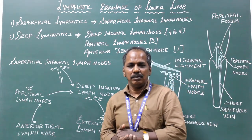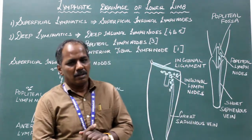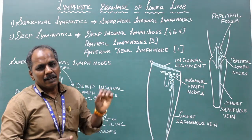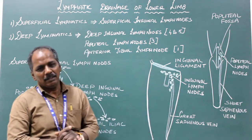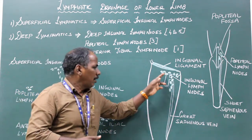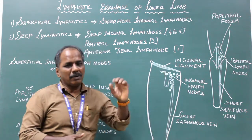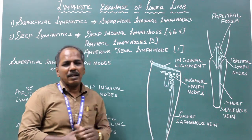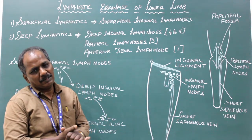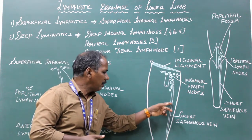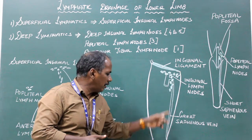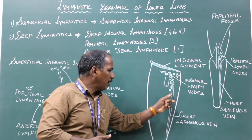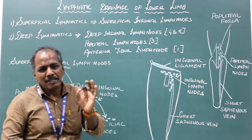Superficial inguinal lymph nodes. They consist of two groups and are present in the superficial fascia of the thigh. There is a vertical group and a transverse or horizontal group. The vertical group consists of four or five nodes and is present near the terminal part of the great saphenous vein, situated along its sides.